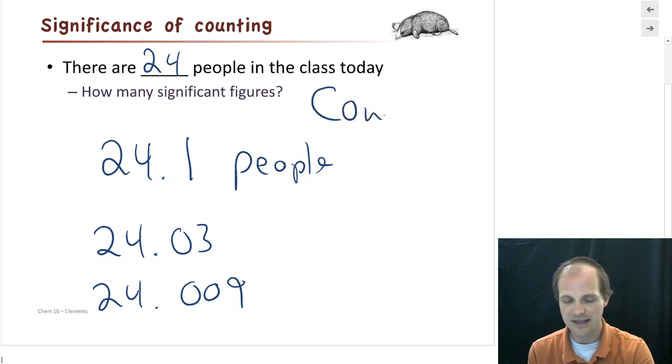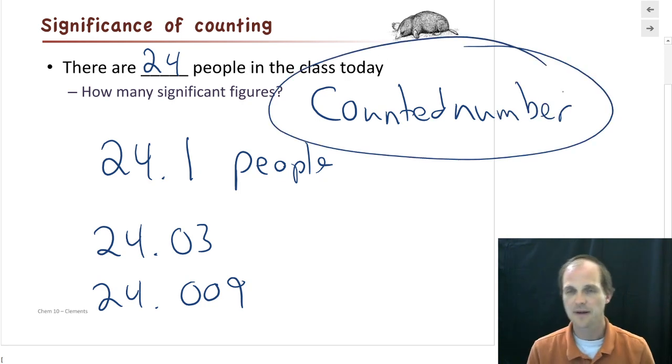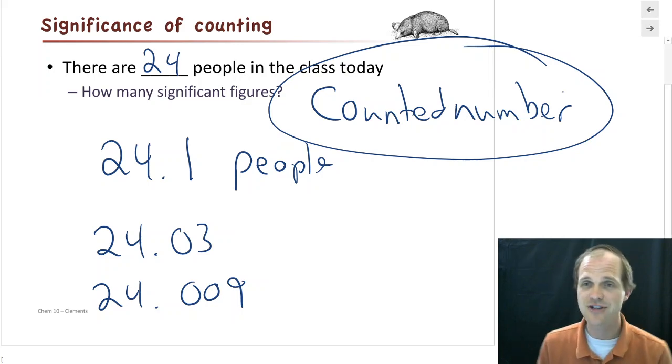This is what we call a counted number rather than a measured number. A measured number is where you're using like a ruler or some sort of measuring device and you're interpreting what the measurement tells you. So if I use a ruler and I say, oh, it's between the two and the three, so I think it's about 2.2. That's what we call a measurement.